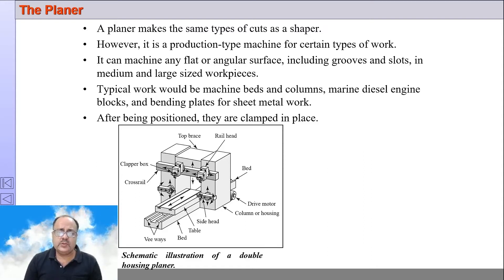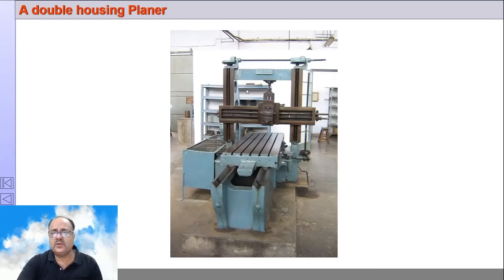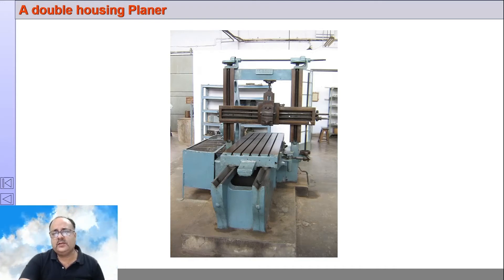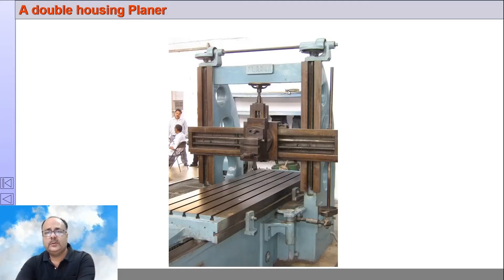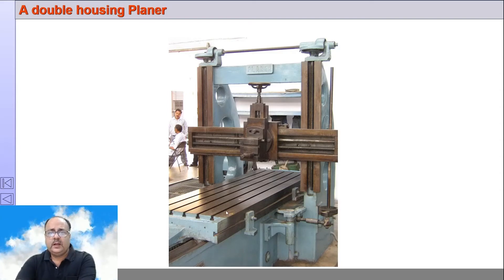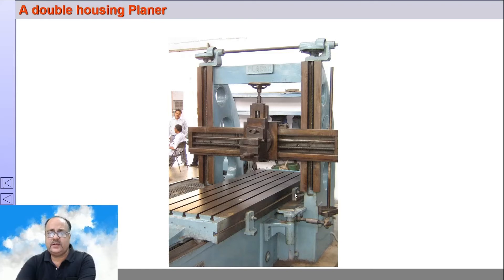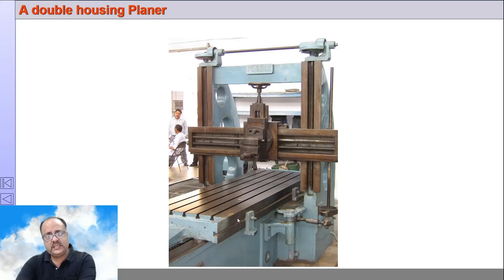This typical diagram shows a double housing planer. This is a double housing planer installed in our shop. This is the table which reciprocates on the bed, and this is the cross rail, the rail head, the housing, and the housing rod. This is the trip dog and the trip dog reversing lever. In the T-slots of the table, two trip dogs can be fitted, and the distance between these two trip dogs determines the length of stroke, which you can increase or decrease as required.